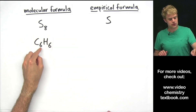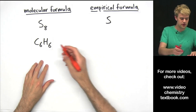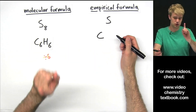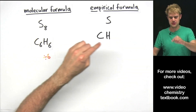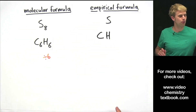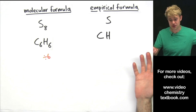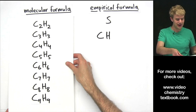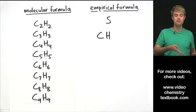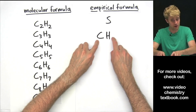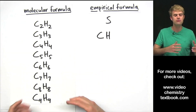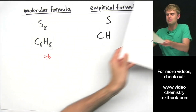C6H6 — in this case both of these are divisible by 6, so the empirical formula will be C, 6 divided by 6 is 1 so we put nothing after it, and H, 6 divided by 6 is also 1 so we don't put anything after that — so it's just CH as the empirical formula. Now, one thing to point out here is that oftentimes many compounds can have the same empirical formula. C6H6 has this empirical formula, but all of these other molecular formulas as well as many others share the same empirical formula CH — so just keep that in mind.